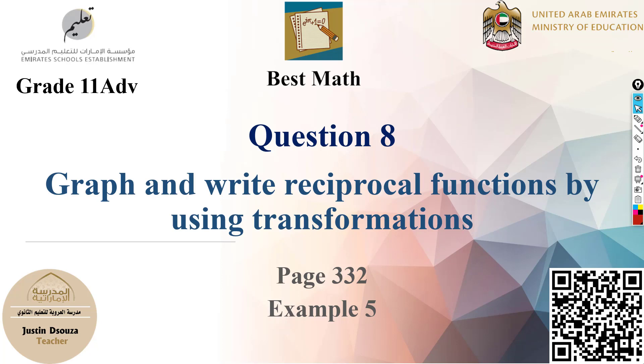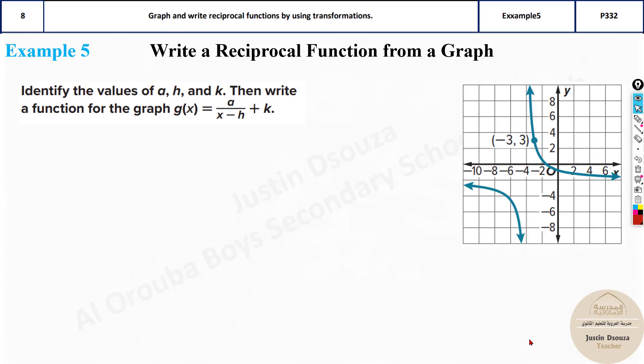We move on to question 8, which is one of the simpler questions in part A. It's an easy and pretty straightforward one. It's about reciprocal functions. So it's about example 5. Let's get on with it.